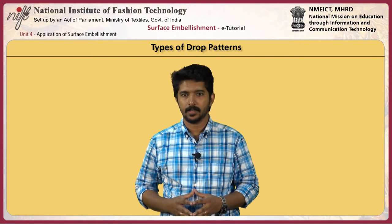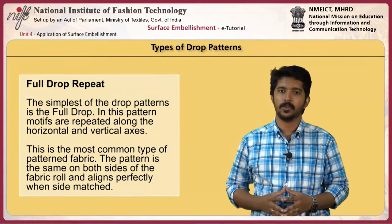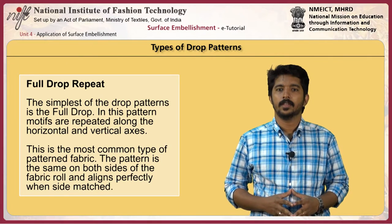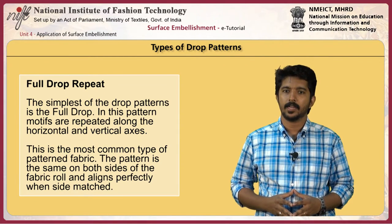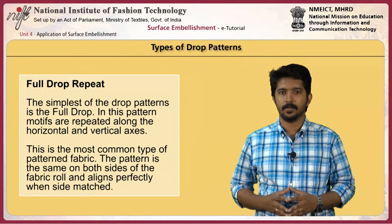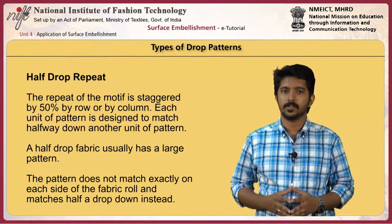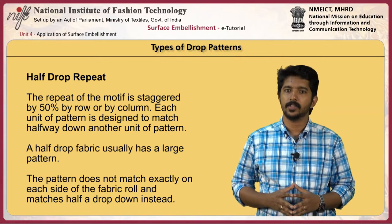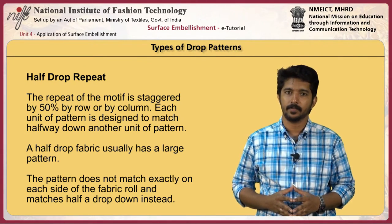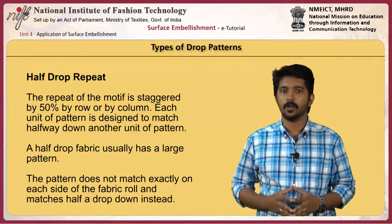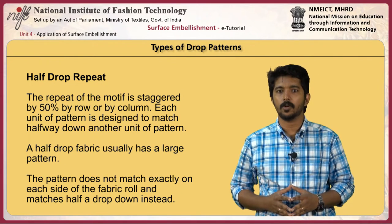There are two types of drop patterns: full drop repeat and half drop repeat. The simplest is the full drop, in which motifs are repeated along the horizontal and vertical axis — the most common type of patterned fabric. The pattern is the same on both sides of the fabric roll and aligns perfectly when side-matched. In a half drop, the repeat of the motifs is staggered by 50% by row or by column. Each unit of pattern is designed to match halfway down another unit of pattern. A half drop fabric usually has a large pattern that doesn't match exactly on each side of the fabric roll.